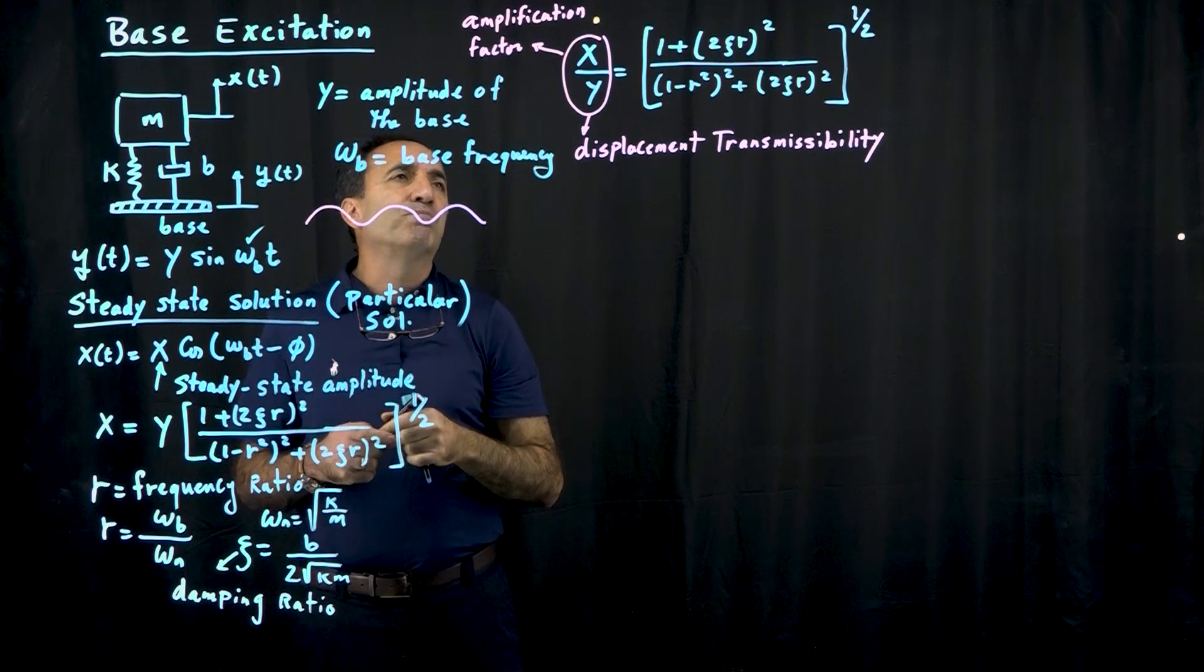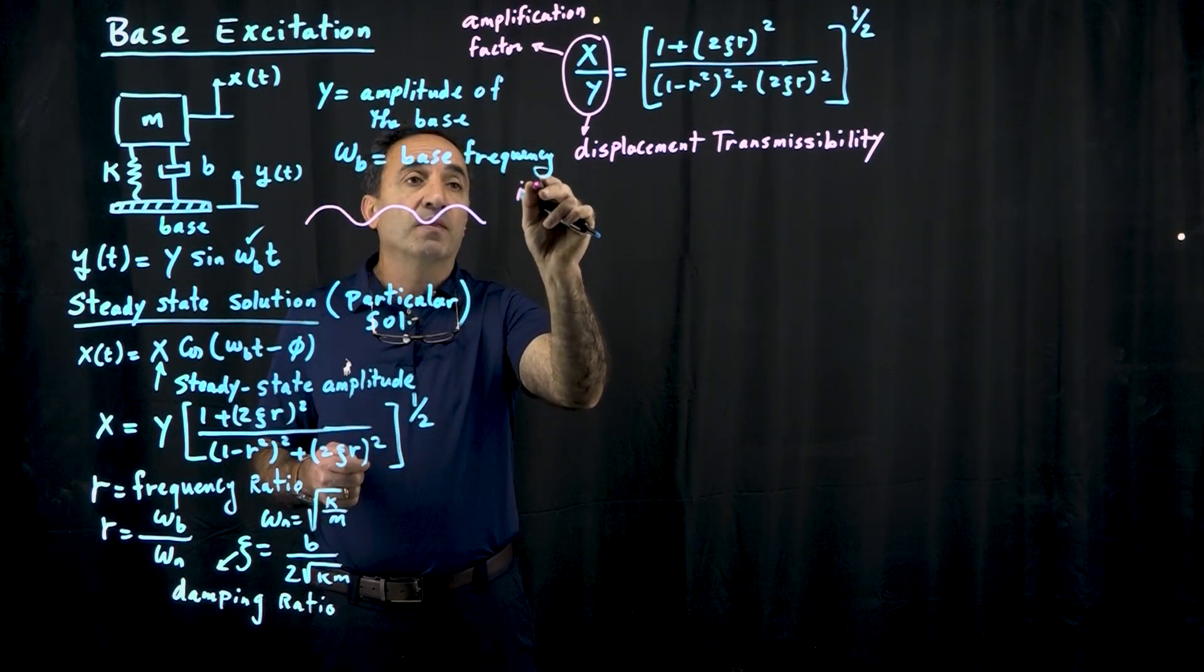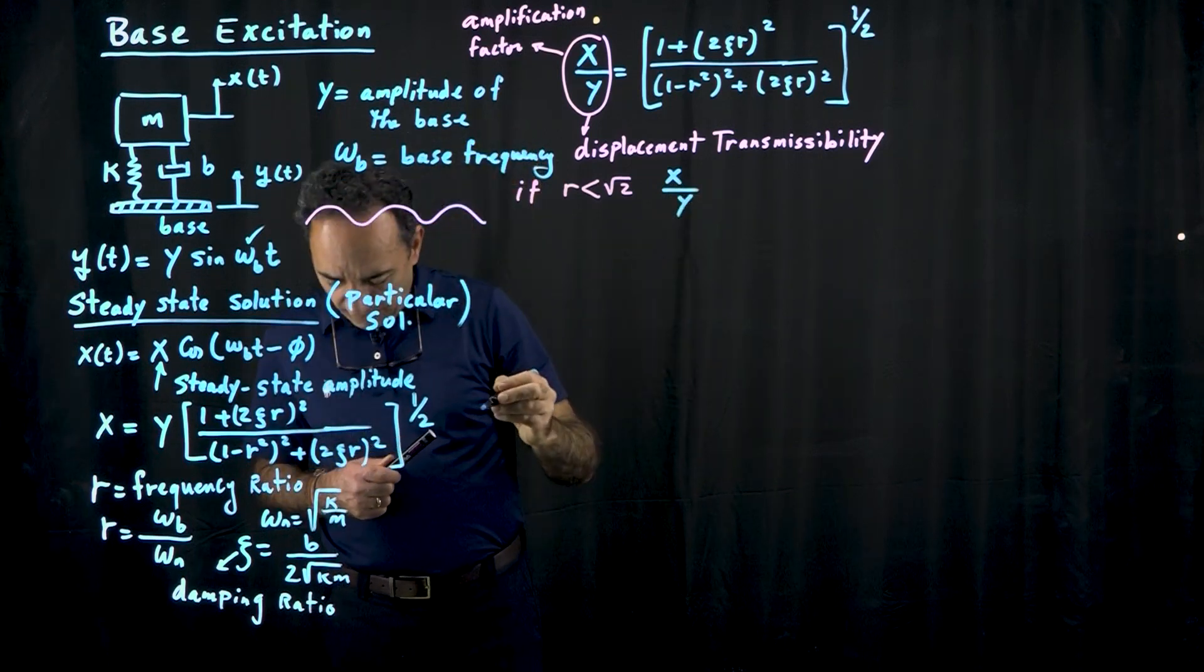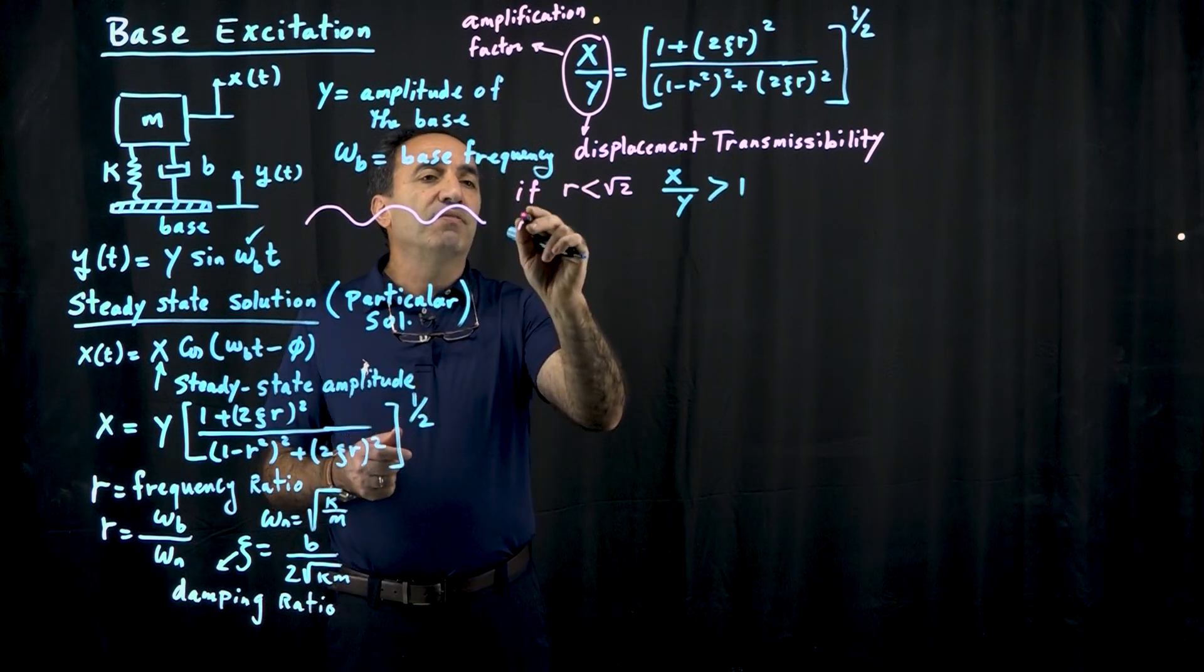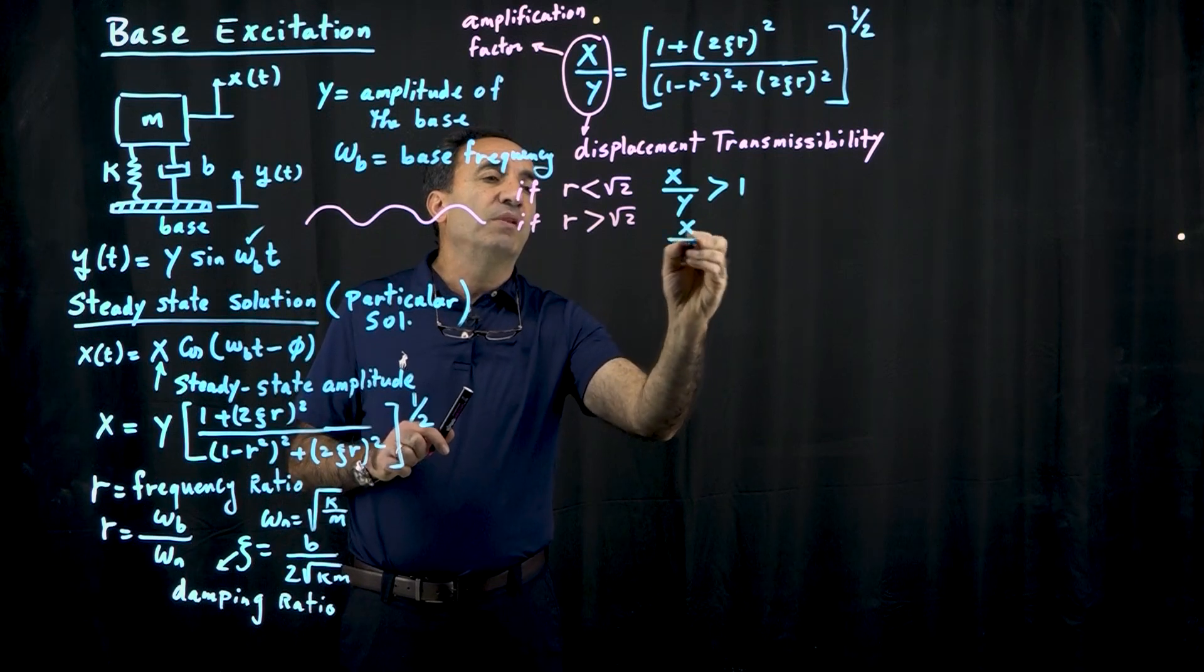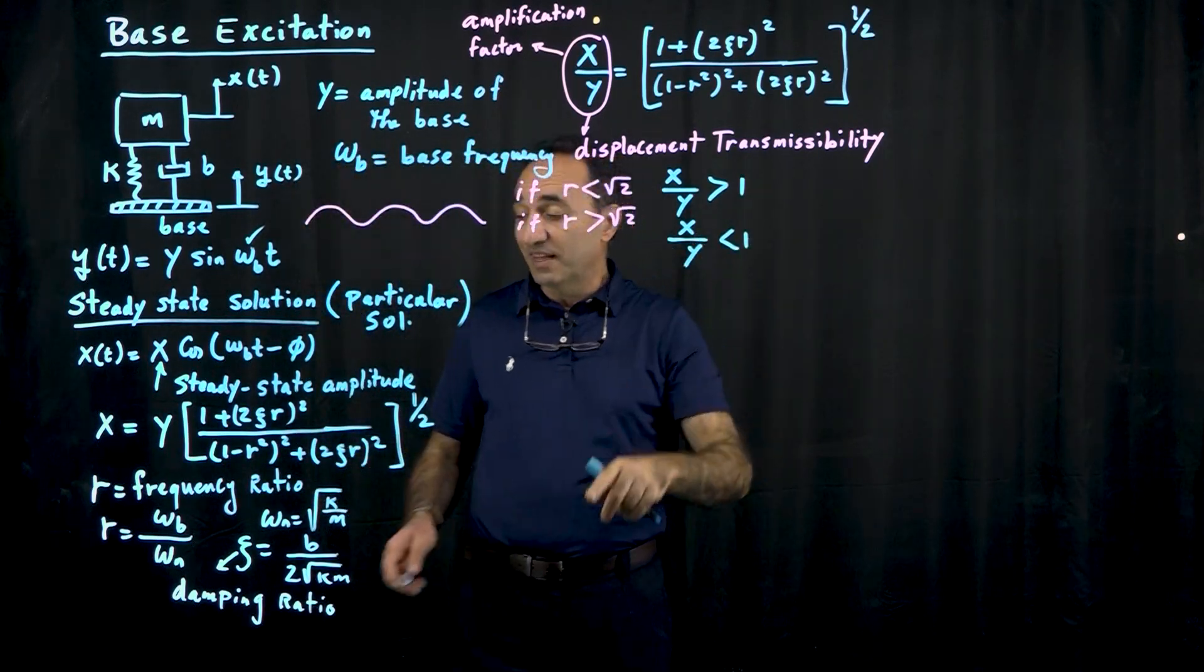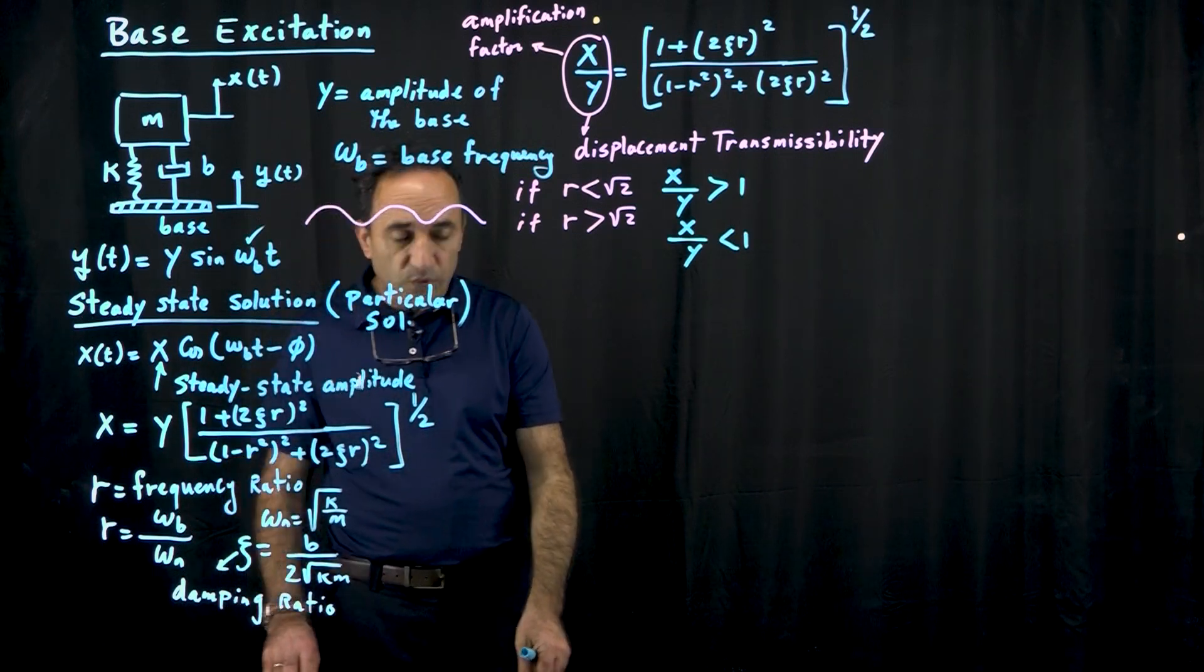Now something interesting about this equation, it turns out that it could be shown mathematically, that if this frequency ratio is less than root 2, then the ratio of x over y actually is going to be greater than 1. So you have an amplification. And if the frequency ratio is larger than root 2, then this amplification factor is going to be less than 1. So obviously for a suspension system, you want the ratio of x over y to be less than 1. So actually you could adjust your system based on this frequency ratio.